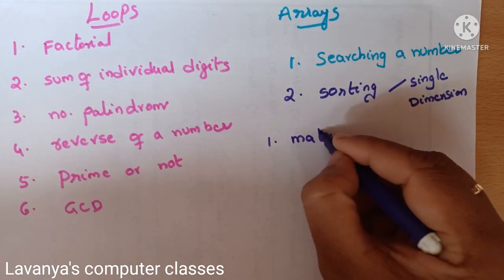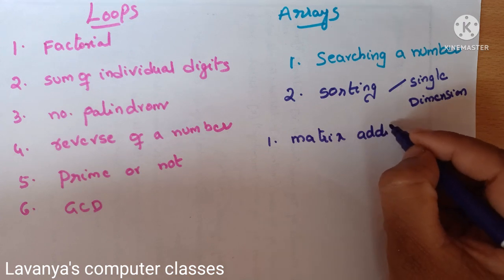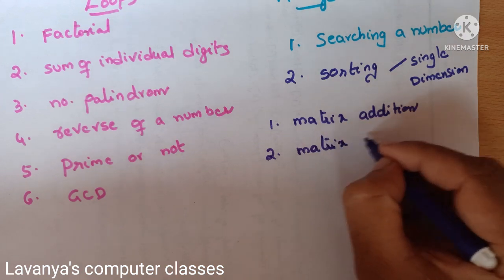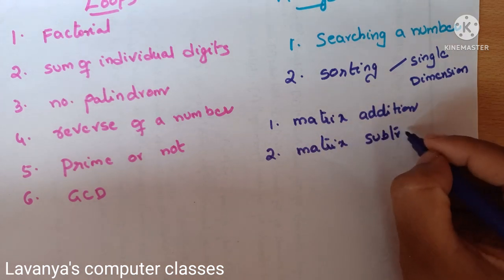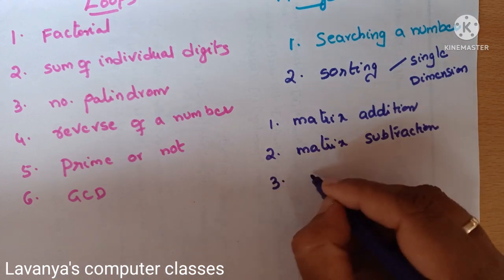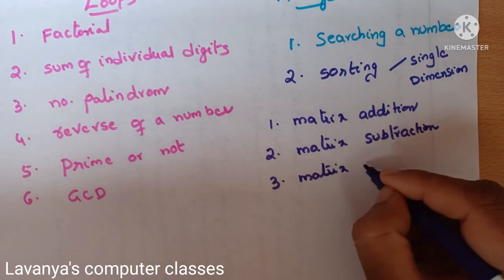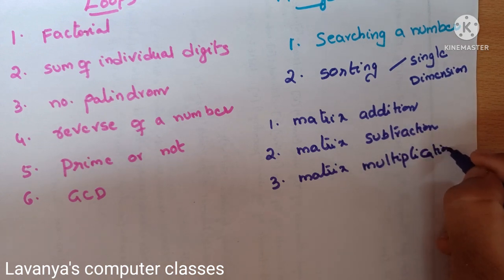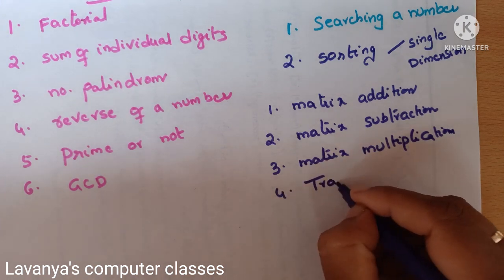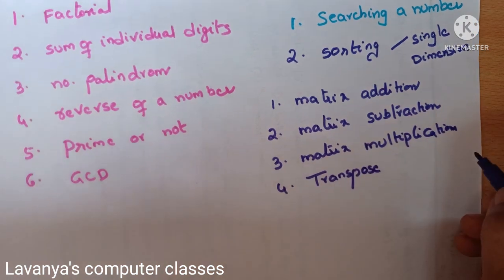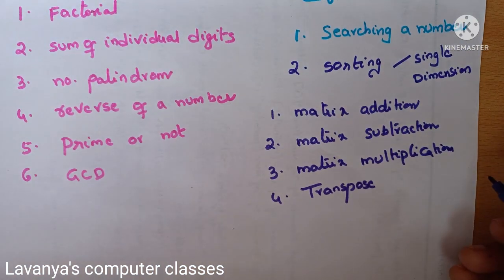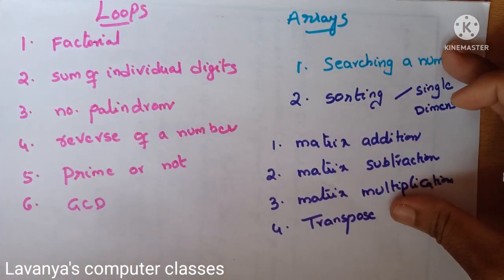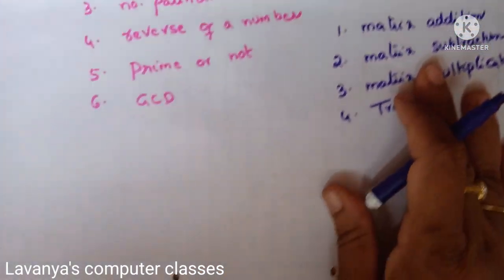Then we go to double dimensional arrays. The important programs are: matrix addition — sum of two matrices; matrix subtraction — also important; matrix multiplication — multiplication of two matrices, very very important; and transpose of a matrix — also an important program. So these four programs are in double dimensional arrays, covering loops and arrays concepts.